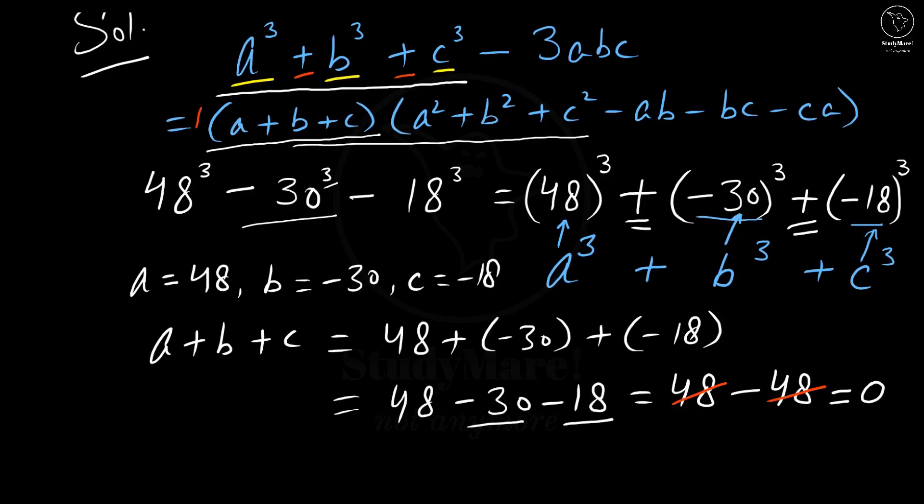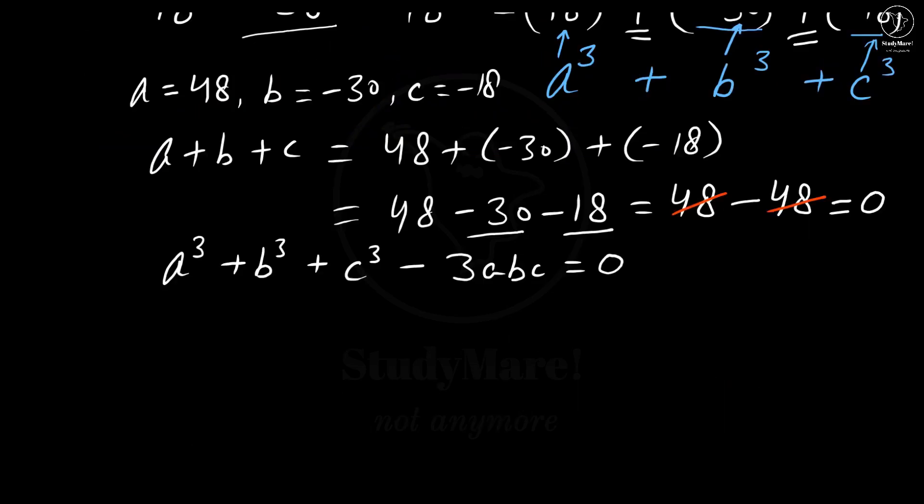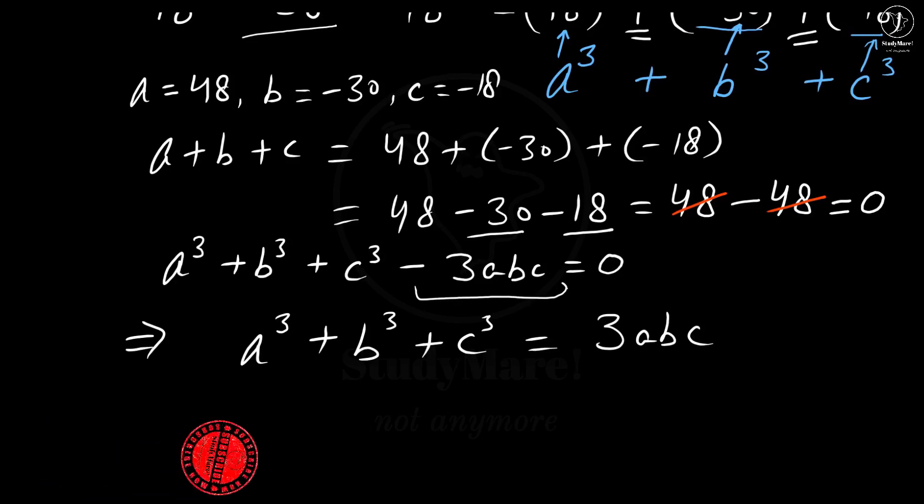Now if you look at this identity here, a + b + c is one of the factors, and if this factor is 0, this entire term gets reduced to 0, because any number multiplied by 0 is 0. That means if we just copy it down, a³ + b³ + c³ - 3abc is equal to 0, which can be simply written as a³ + b³ + c³ is equal to 3abc, as we have taken this minus 3abc to this side.